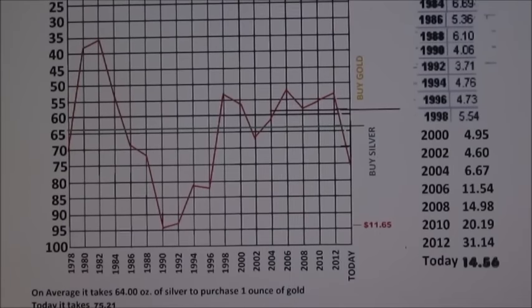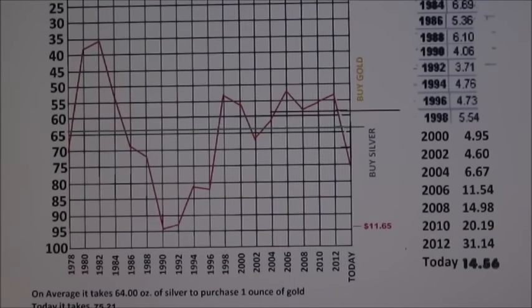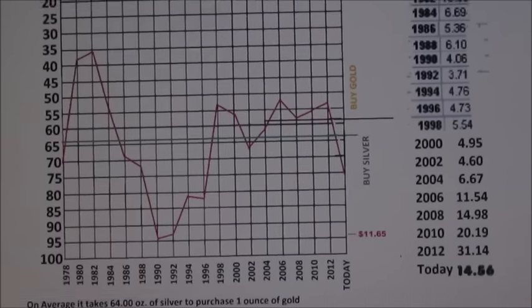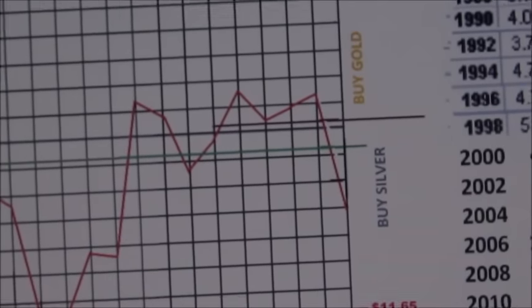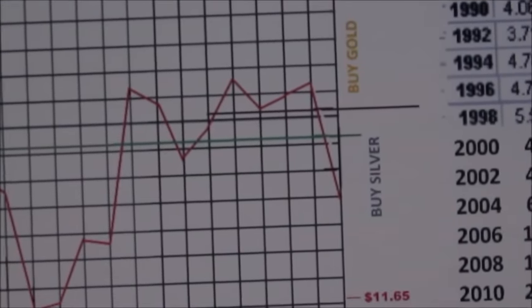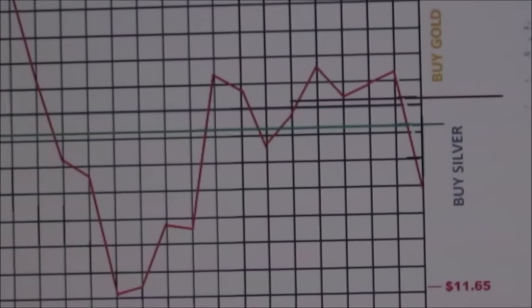That means today it takes 17.5% more than historically average to purchase that one ounce of gold. So if you look at where we are, we're in the buy silver category. We're below the average there, so it'll be a good time to buy silver.